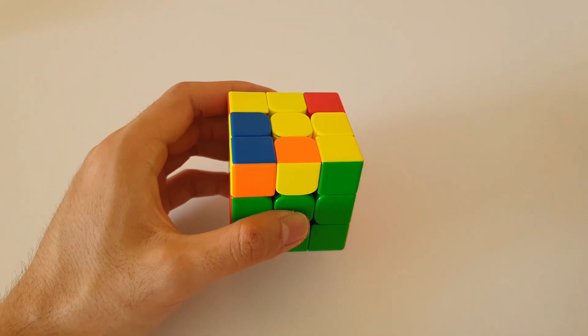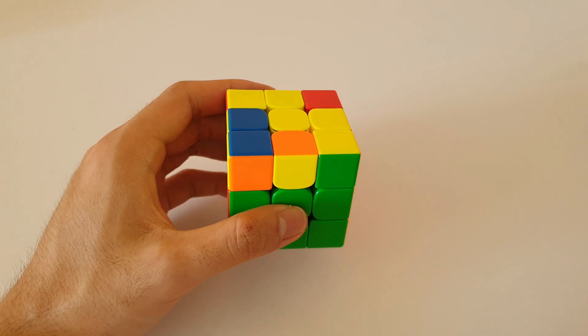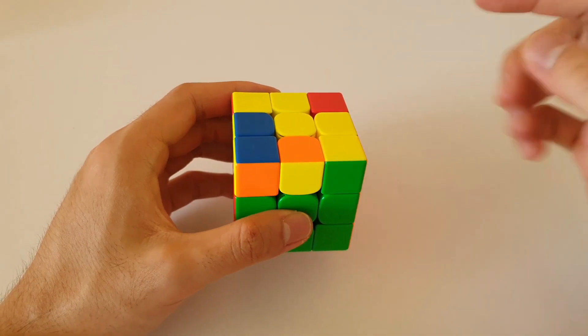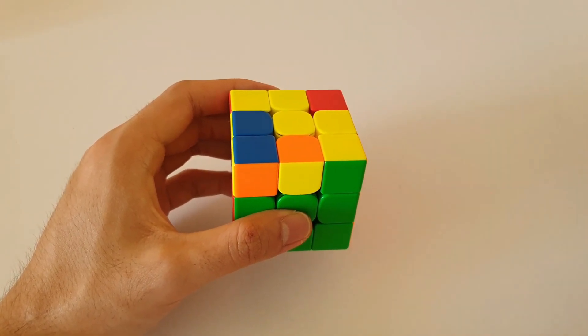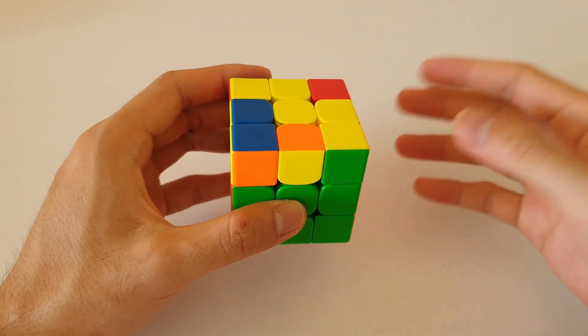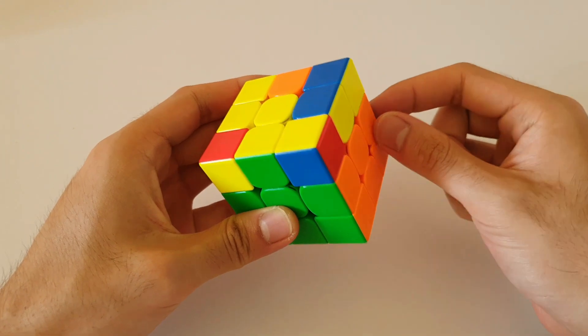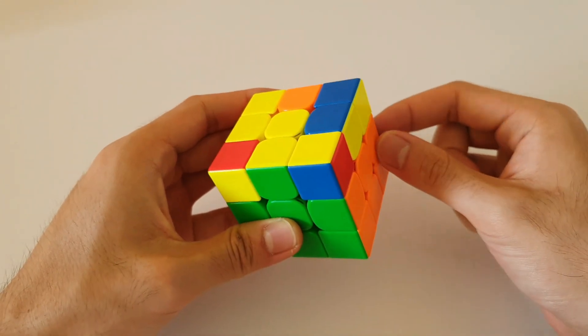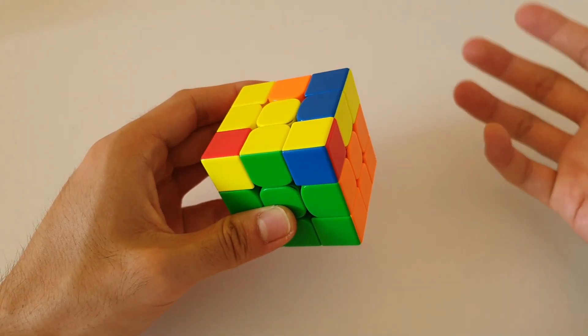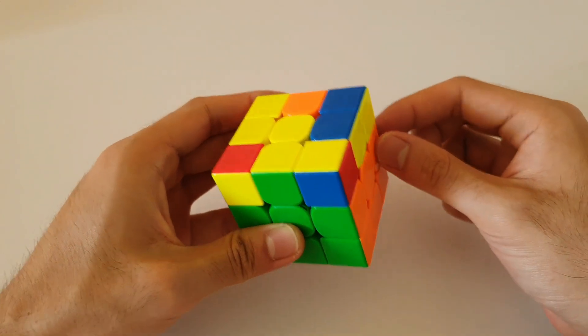For those of you who are not a fan of using left-handed algorithms, you can actually mirror this to the back right angle and use your right hand. In this case simply by doing a U2 we've mirrored it to the back right angle and now our focus is on this back right F2L pair. Same idea as previously but just done from a different angle.